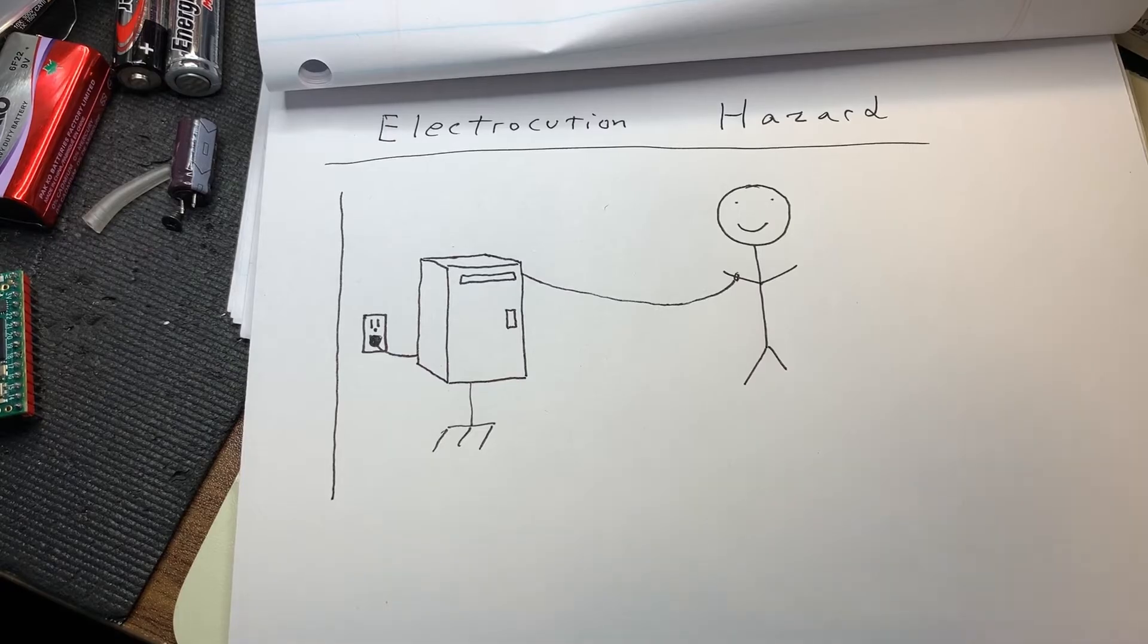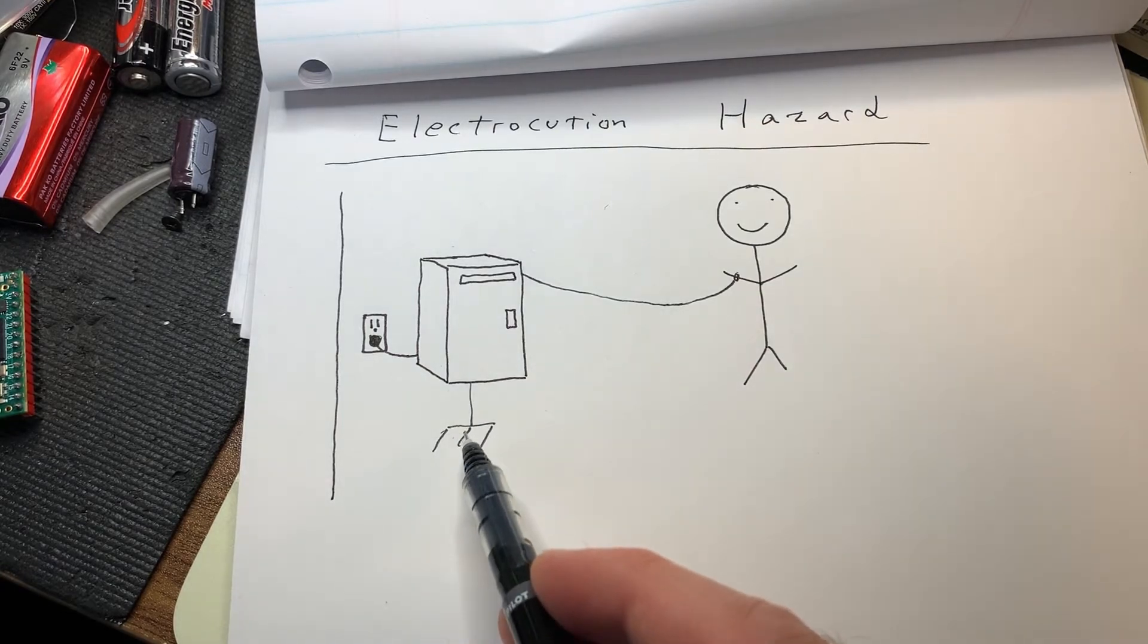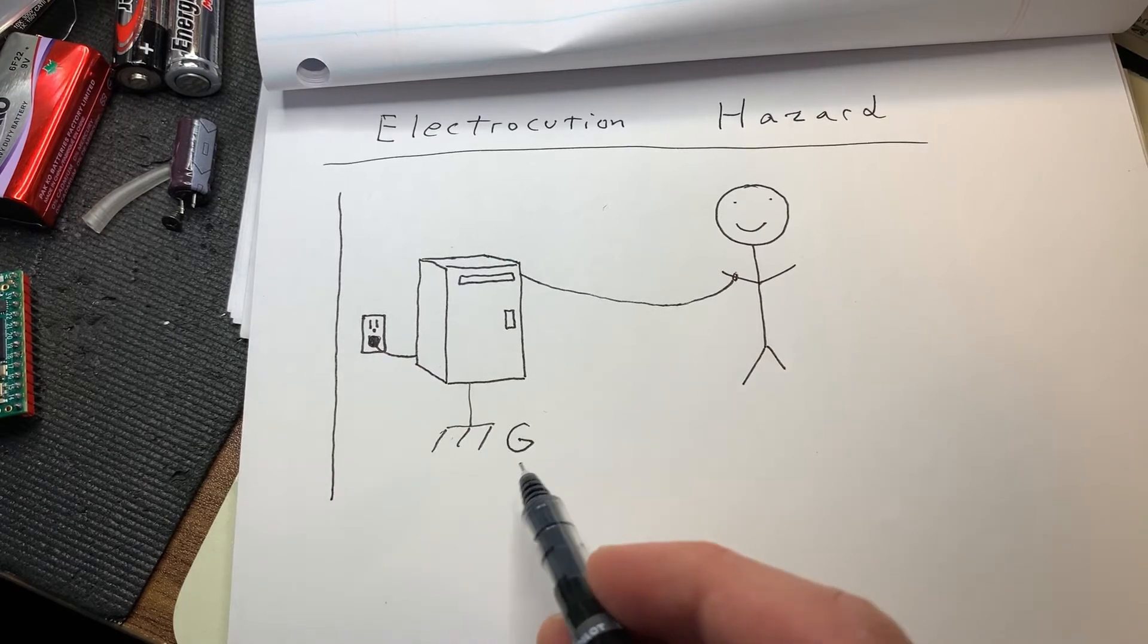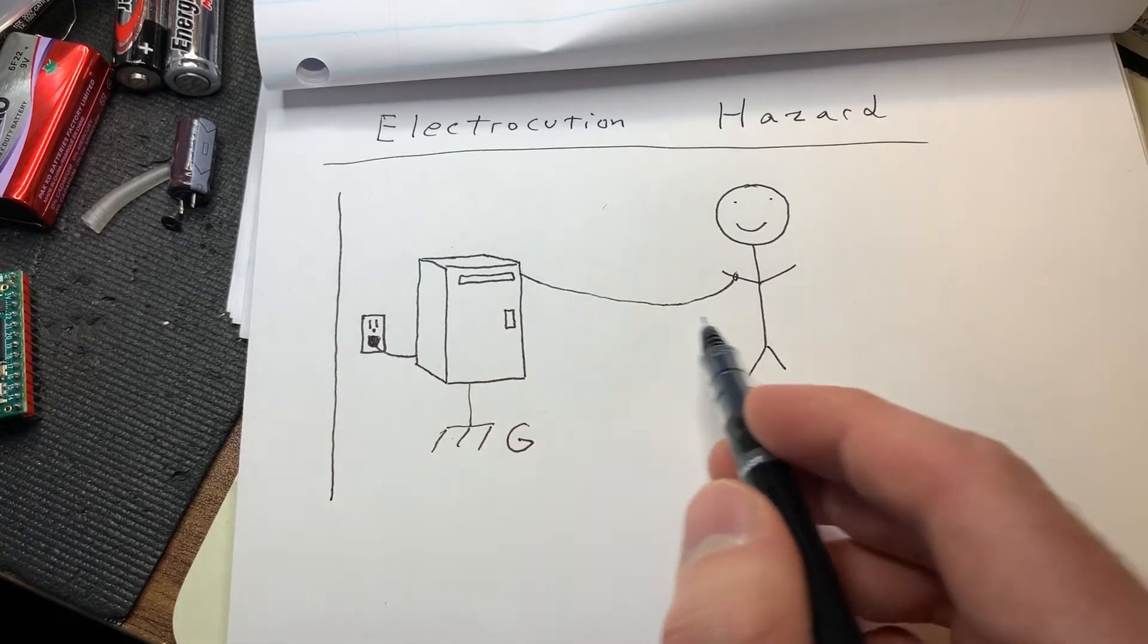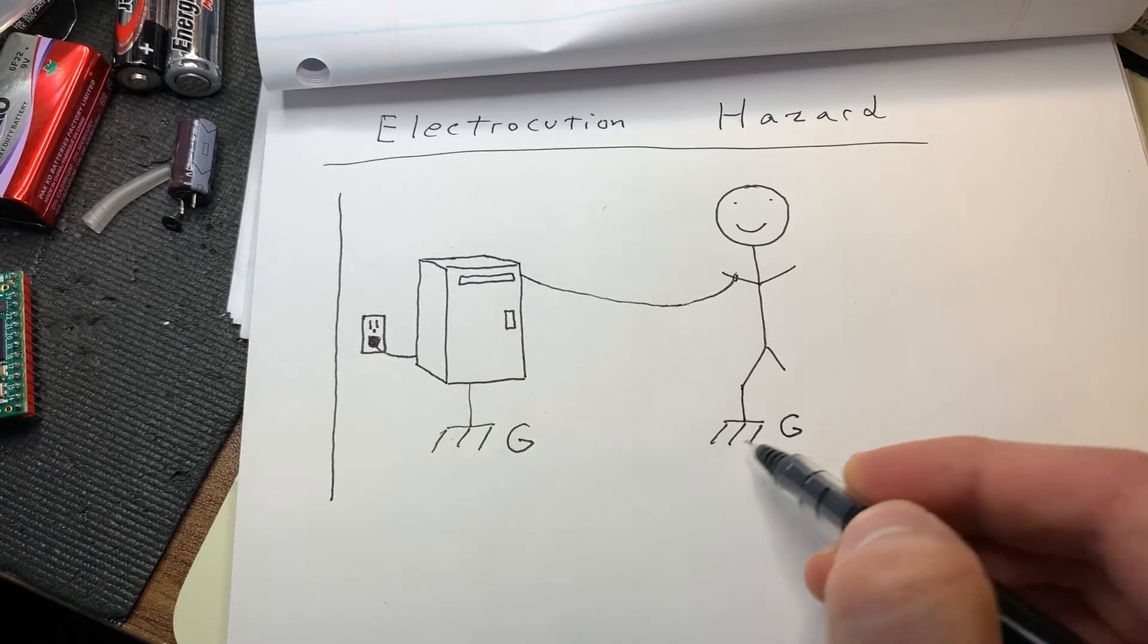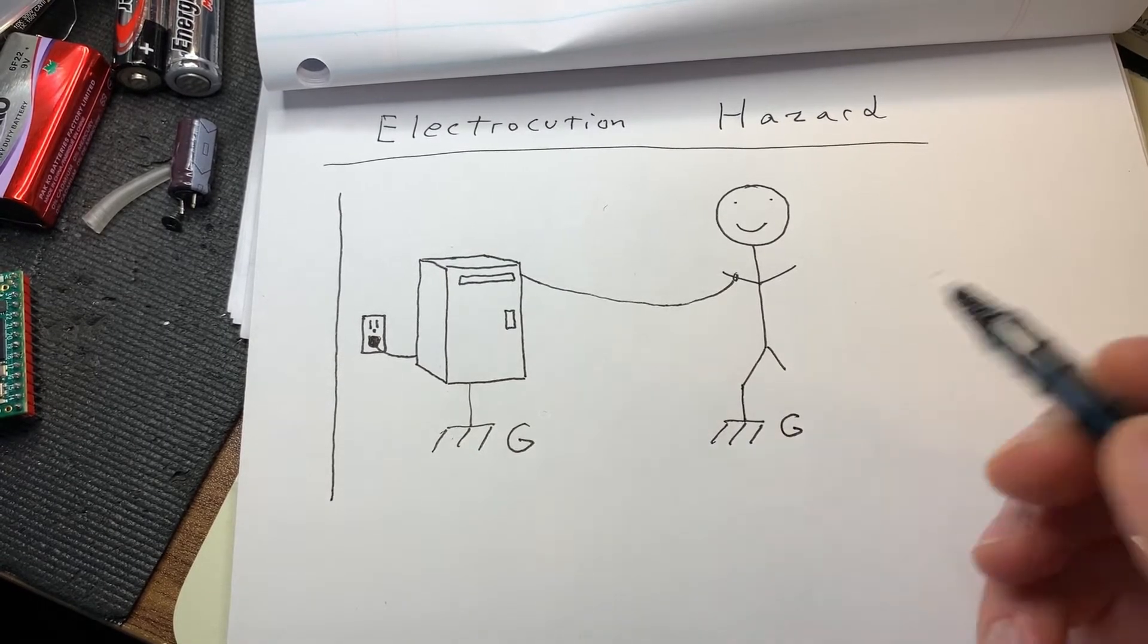This demonstrates the problem with this scenario, because by attaching your computer to the outlet, you've effectively earth referenced it or put it back to ground reference. And through this cable, you are now also earth referenced or ground referenced. This is the same. This symbol just means ground.